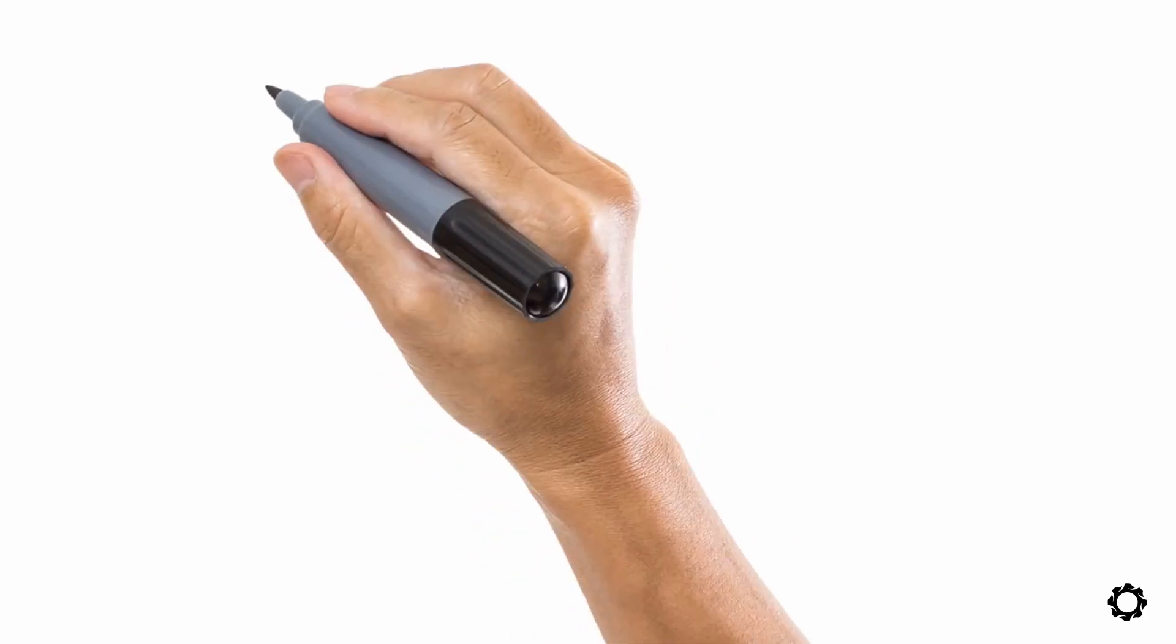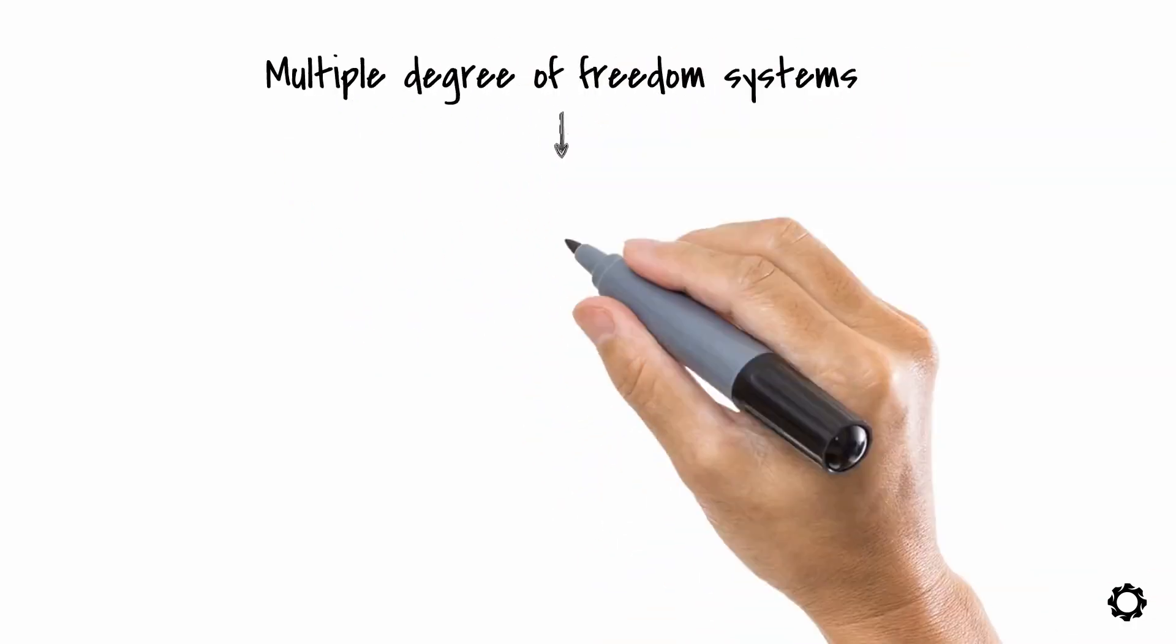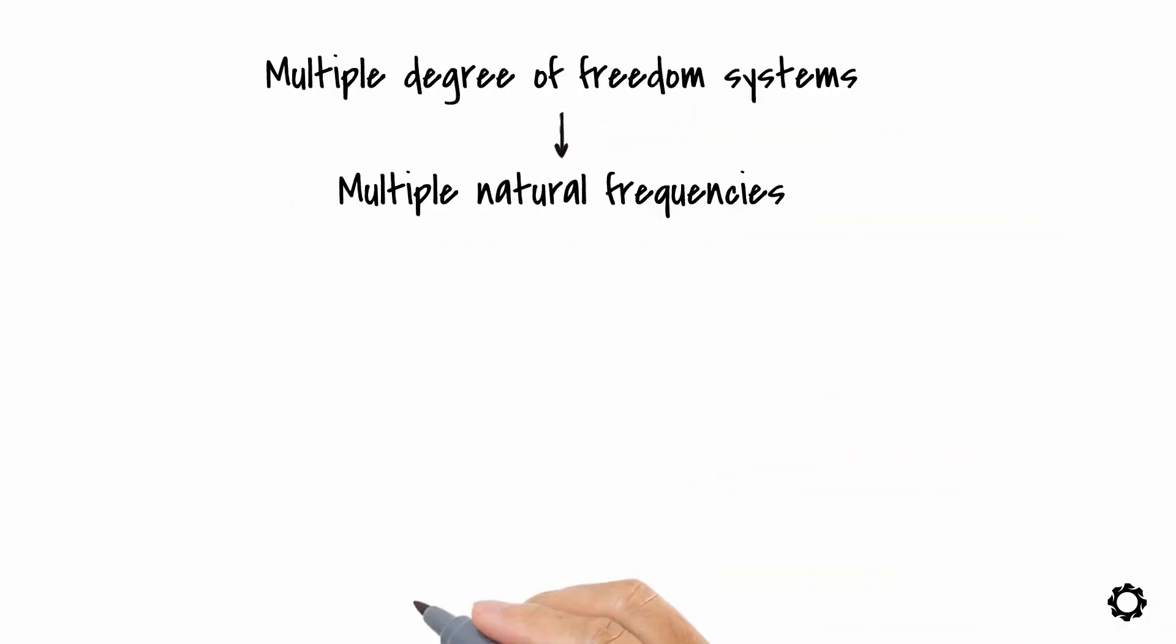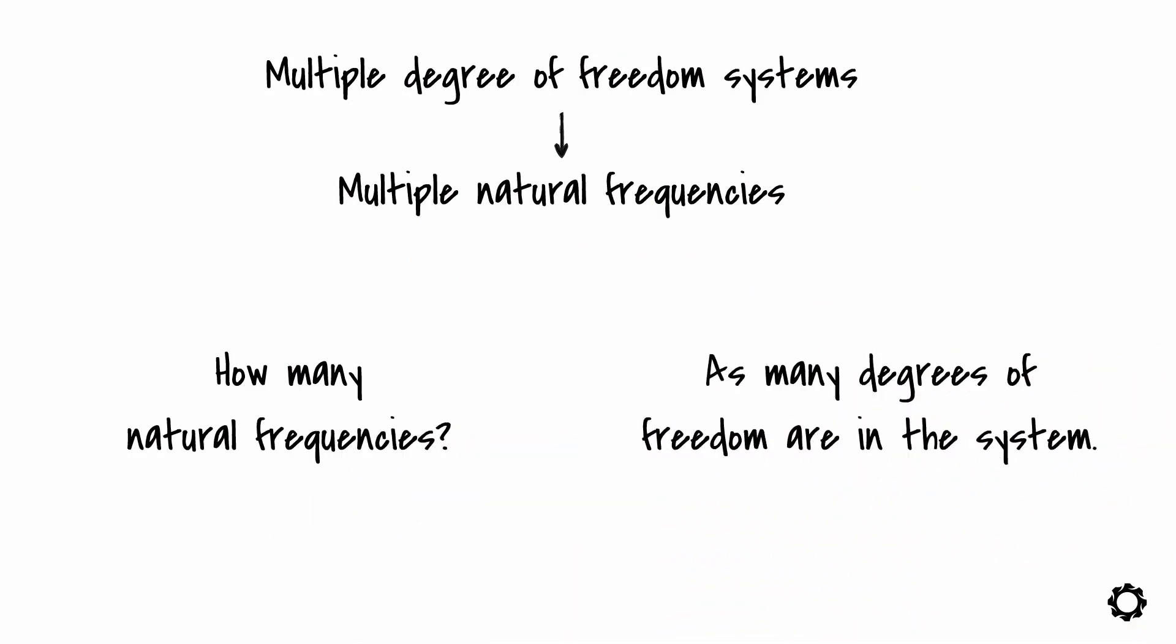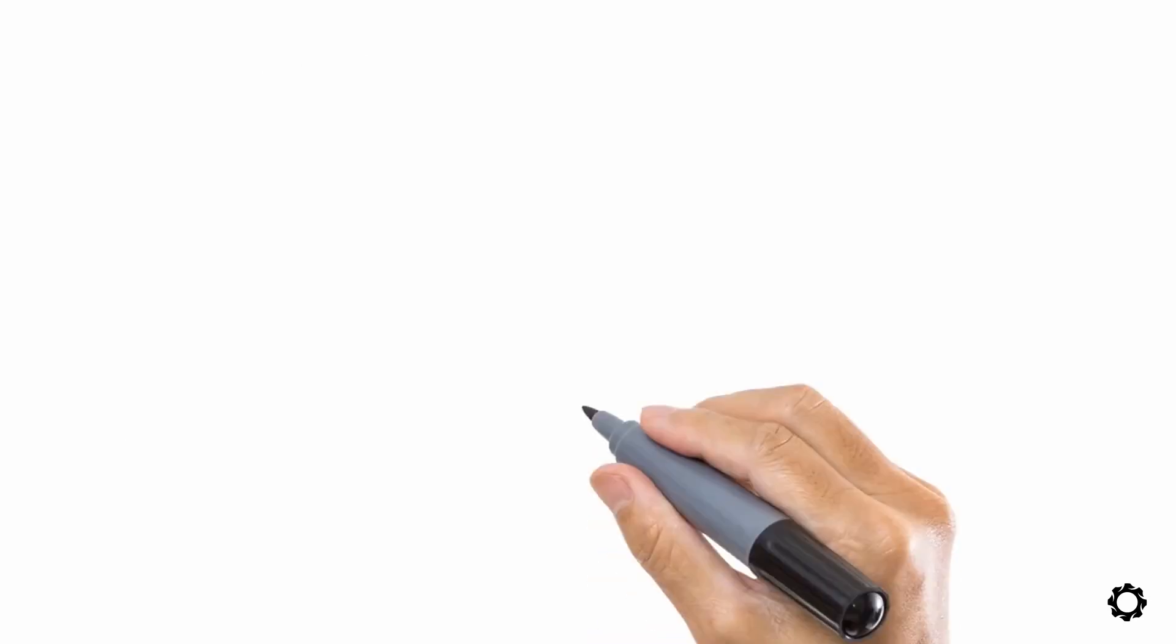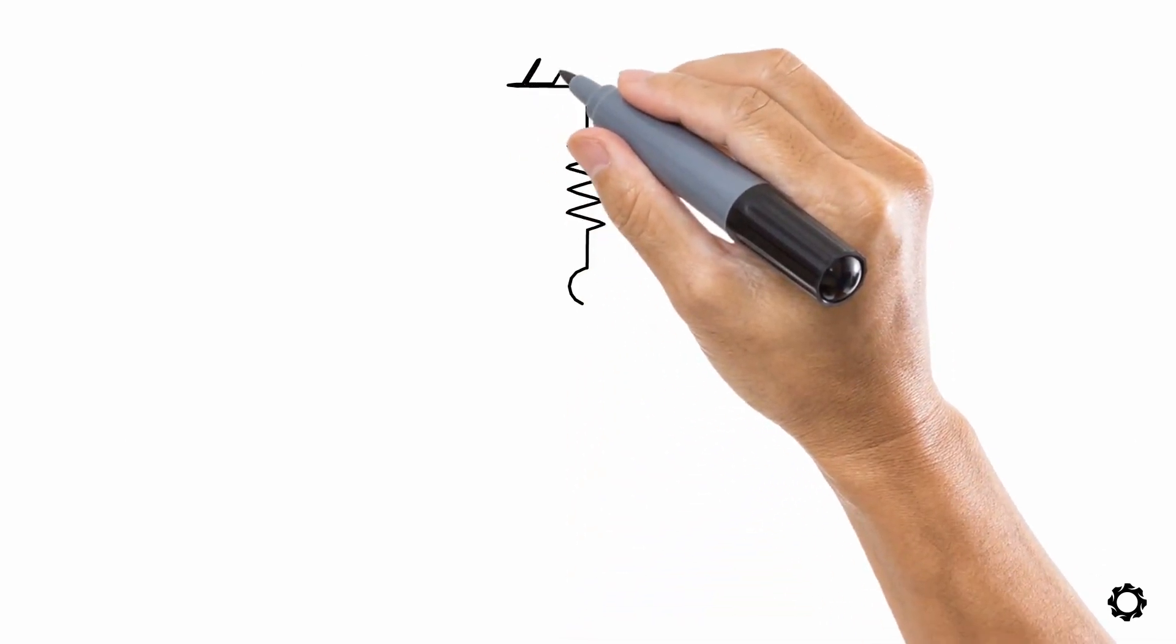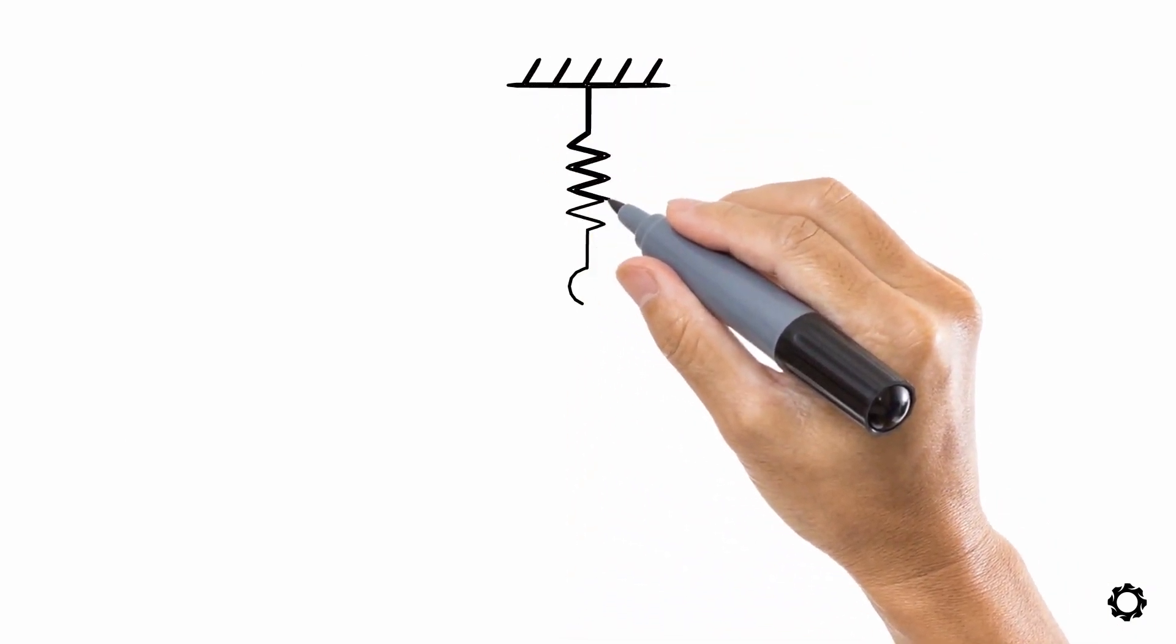This is straightforward. Multiple degree of freedom system, multiple natural frequencies. How many natural frequencies? As many degrees of freedom there are in the system. Simple, right? Although this is a pretty easy concept, let's start with a much simpler situation.